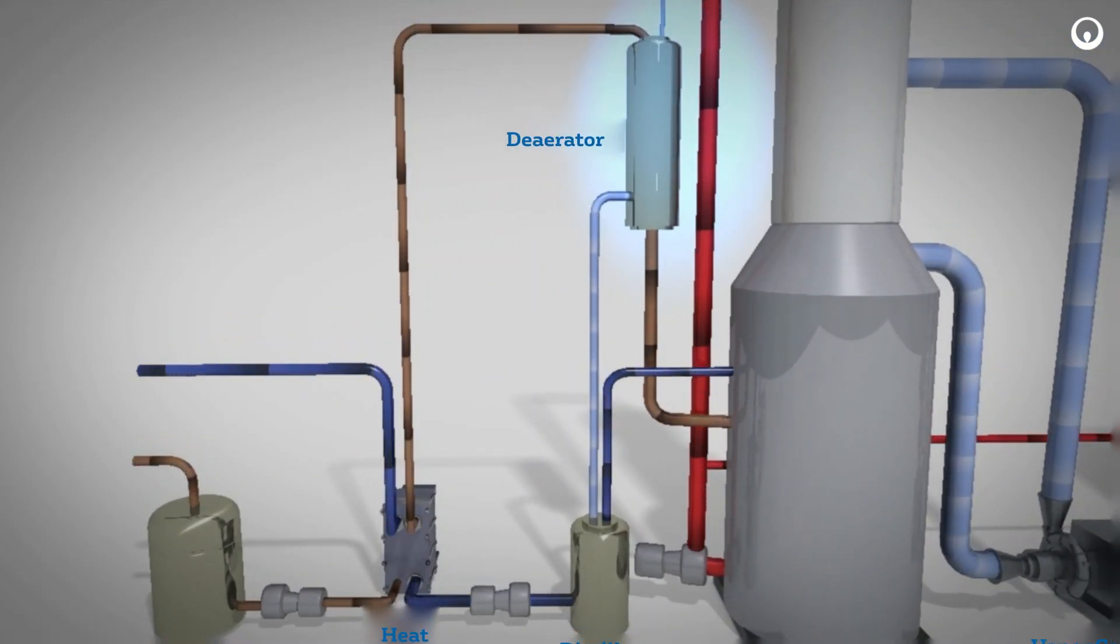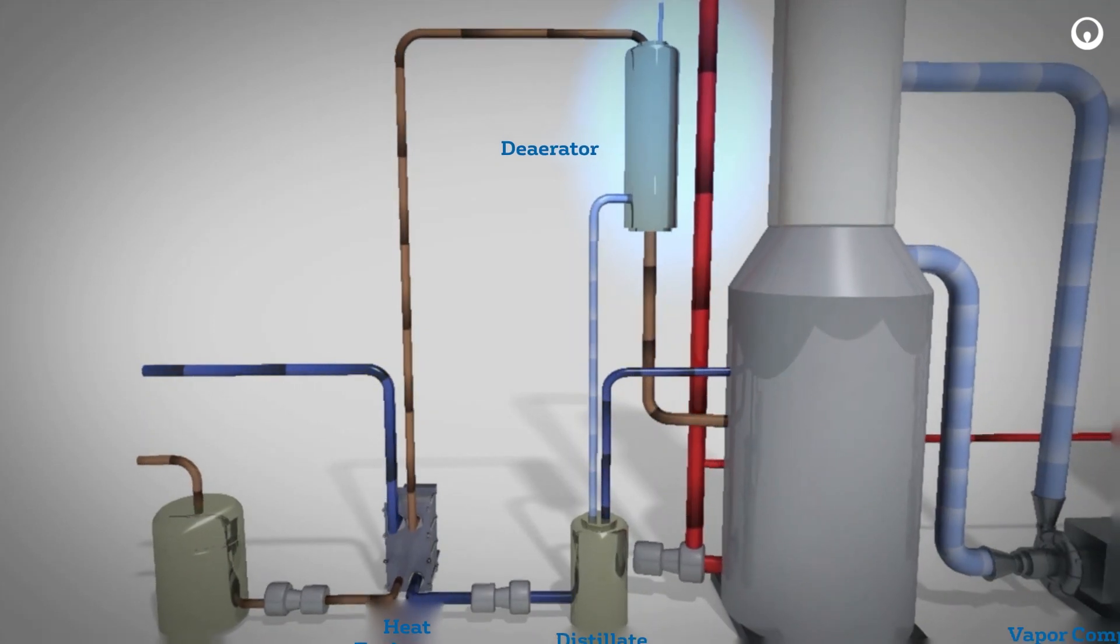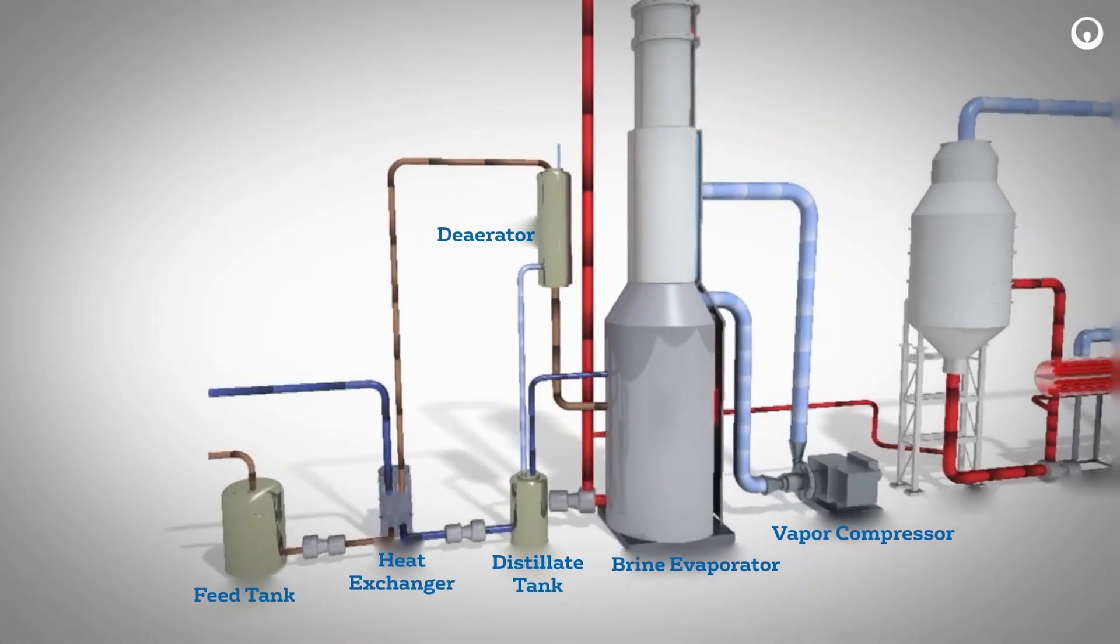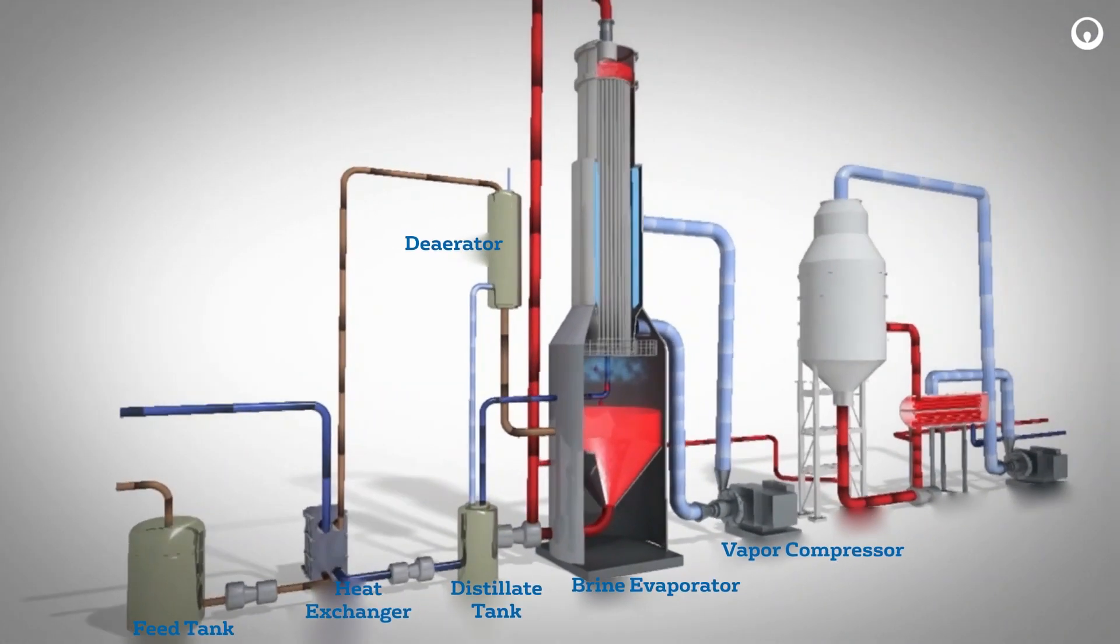In the deaerator, non-condensable gases such as carbon dioxide and oxygen are removed from the brine. The deaerated brine then flows into the brine evaporator sump. The brine from the deaerator enters the sump and mixes with a large volume of brine.